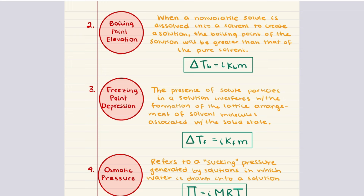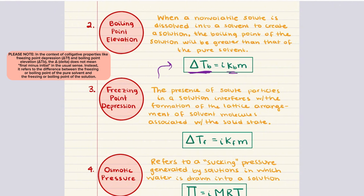Boiling point elevation occurs when a non-volatile solute is added to a solvent, raising the boiling point of the solution relative to that of the pure solvent. This happens because the presence of solute particles lowers the solvent's vapor pressure, requiring a higher temperature to reach the vapor pressure necessary for boiling. The boiling point elevation can be calculated using: delta T_b equals i times K_b times m, where delta T_b is the change in boiling point, K_b is the boiling point elevation constant unique for each solvent, m is the molality, and i is the van't Hoff factor indicating the number of particles a solute dissociates into.